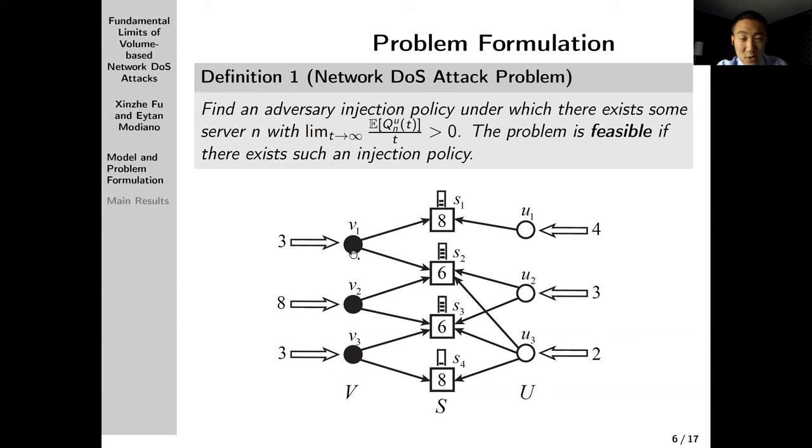So if the adversary really wants to block the user traffic from getting service, it needs to do something smarter. For example, it can choose to let V1 send traffic of 8 to S2. For V2, it's split half and half, 4 to S2 and 4 to S3. For V3, it puts its traffic to S3. We can verify that under this smarter allocation, the adversary actually achieves this goal. This goal is more interesting and more meaningful than just letting the queue blow up.